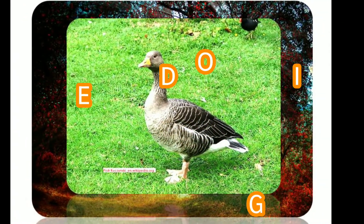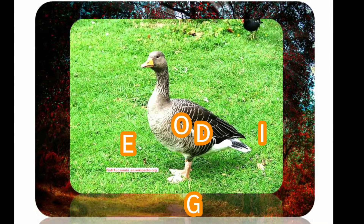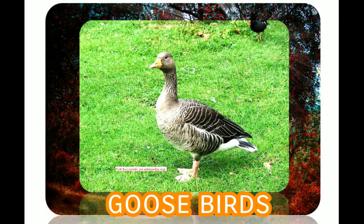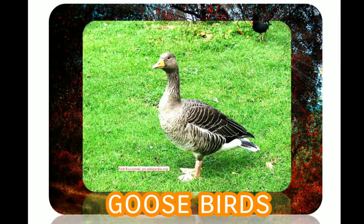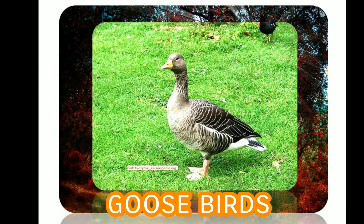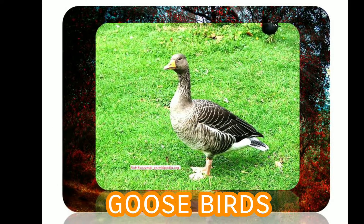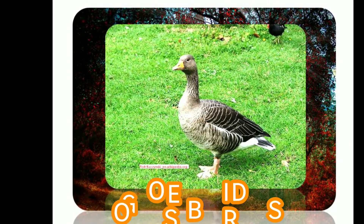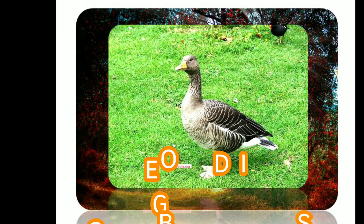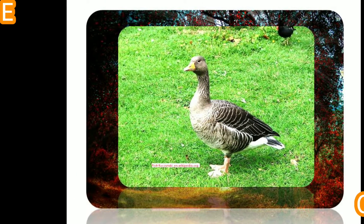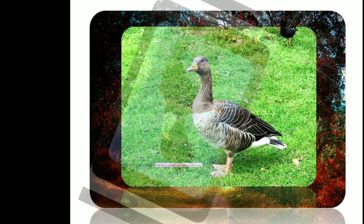Goose birds, like most waterfowl, feed on aquatic vegetation, grass, fruits, and young sprouts. They also eat grain and corn from agricultural areas and live around ponds, rivers, and lake shores. Geese may survive for 10 to 15 years in the wild and more than 30 years in captivity.